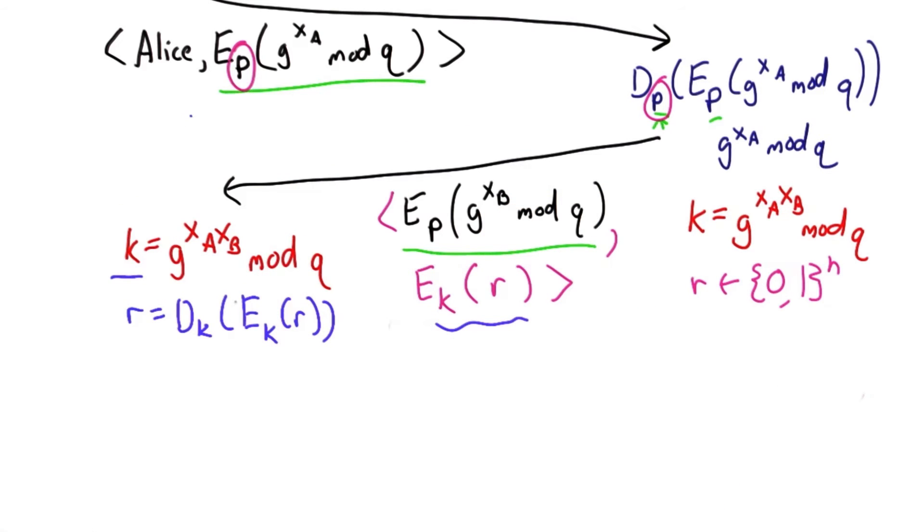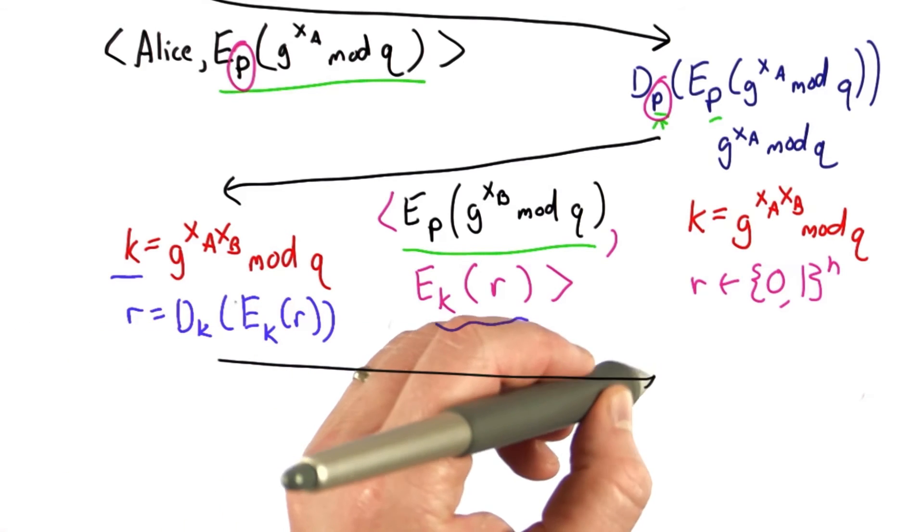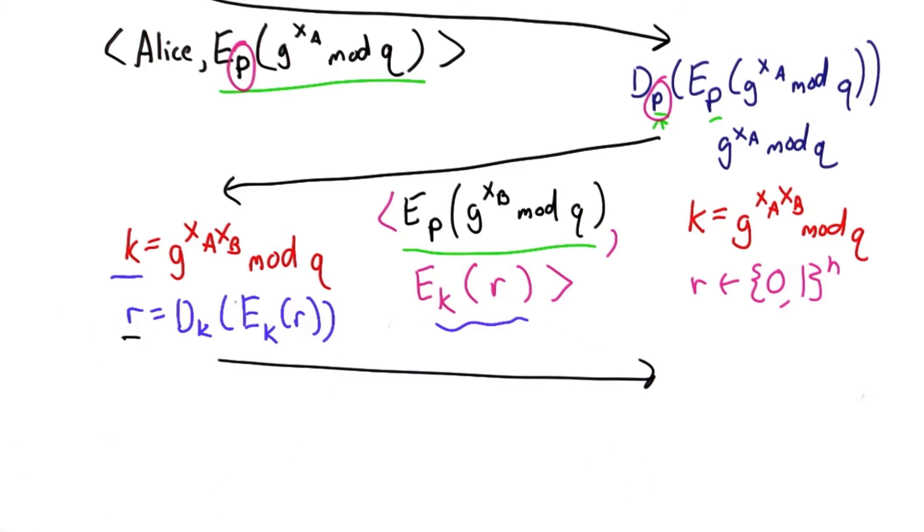This hasn't yet proven anything to the server, so to finish the protocol, Alice has to send a response back to the server that proves that she was able to obtain R.